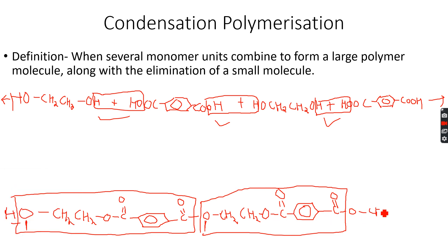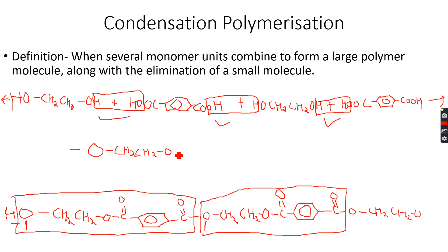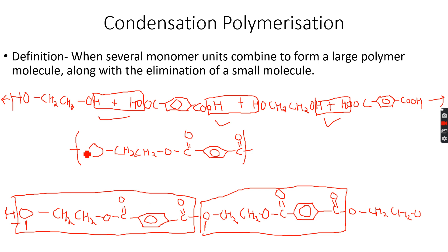We will have another CH2, CH2 — something like this. So now you can see that this is the way the molecule is repeating, so one repeat unit of this polymer becomes this.